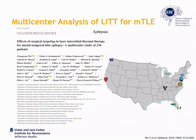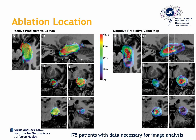As with any other stereotactic procedure, trajectory planning and ablation location are of significant importance when using laser ablation for the treatment of mesial temporal lobe epilepsy. This is something that we learned in a multi-center study that involved 11 centers in the United States. As part of this analysis, we retrospectively looked at the location of ablations performed within the mesial temporal lobe and correlated those to clinical outcomes in order to identify the optimal location for laser ablation in this cohort.